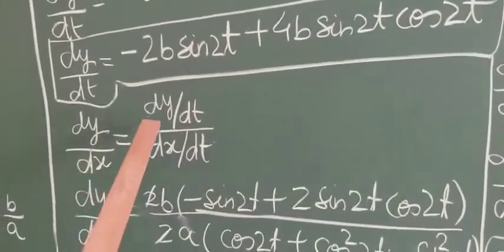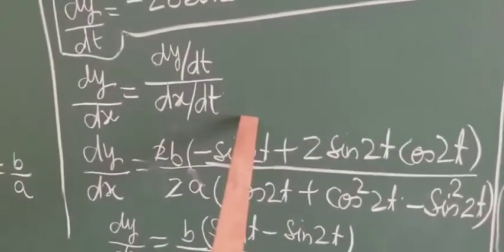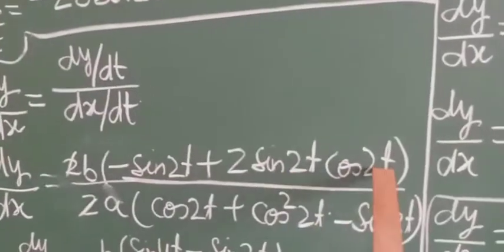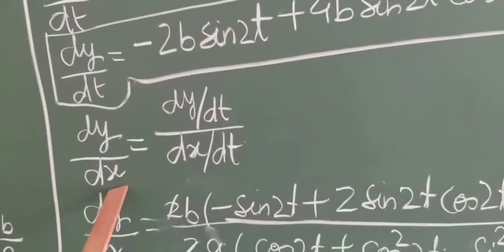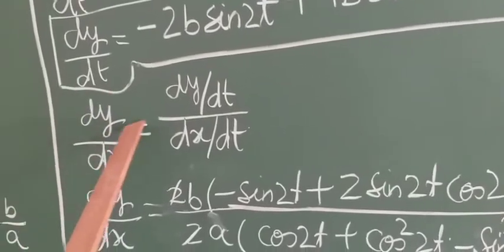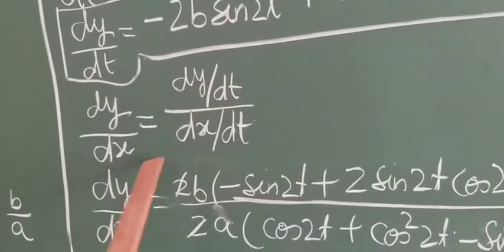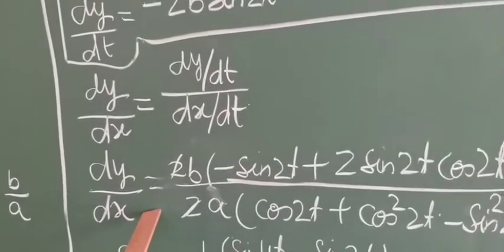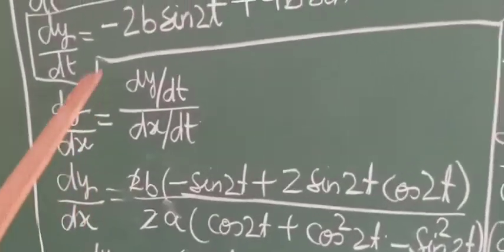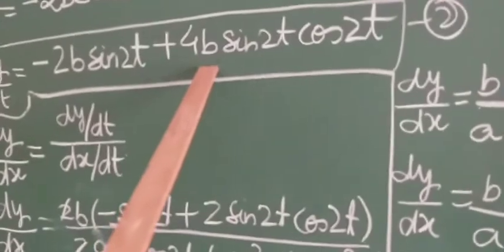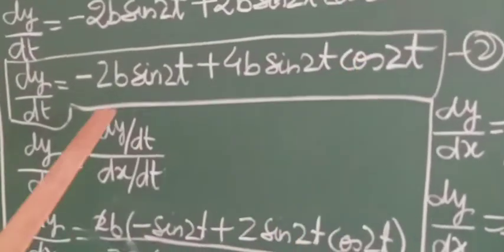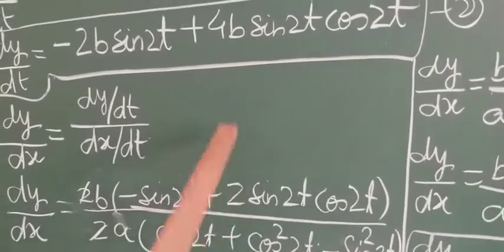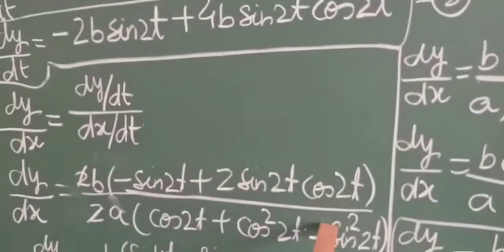So dy/dx equals dy/dt in the numerator over dx/dt in the denominator. Writing dy/dt as 2b·(−sin2t + 2sin2t·cos2t) and dx/dt as 2a·(cos2t + cos²2t − sin²2t), the 2s cancel giving b/a times (−sin2t + 2sin2t·cos2t) over (cos2t + cos²2t − sin²2t).